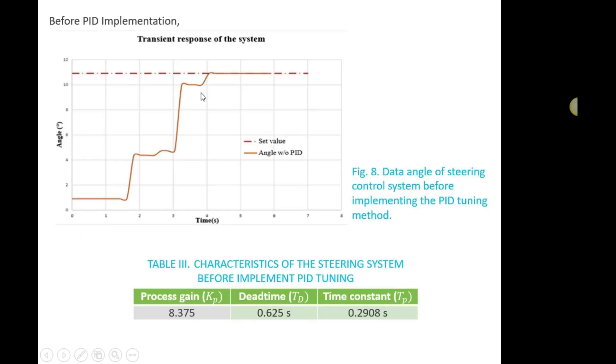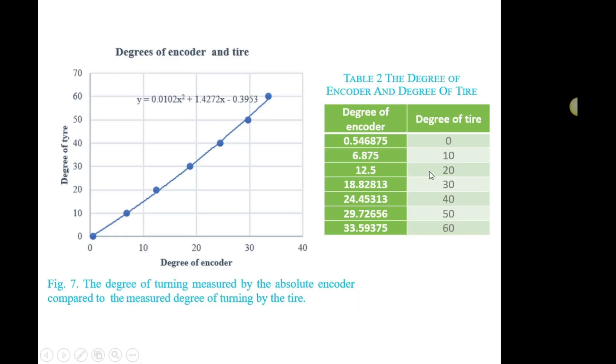This graph illustrates the data of the steering system before any PID tuning methods are implemented. The set value of 10 degrees of angle is set initially due to encoder limitation. The system responds to the given value to operate and perform. According to this figure, the transient response is obtained and all parameters are shown in Table 3. When the tire is at zero degrees, the encoder reads 0.5, meaning there are errors between the tire angle and encoder angle.